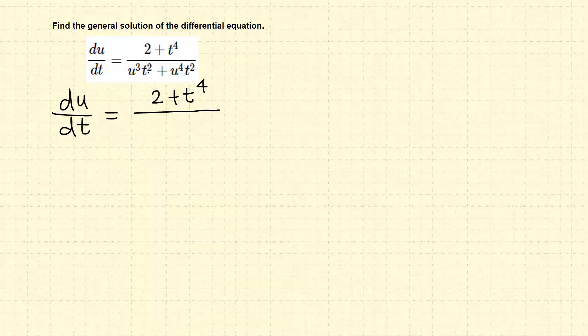So just factor u. Let's look at here: u^3, u^3, u^4, t squared, t squared. Let's factor t squared. We can factor more but we want to separate the variables, so just factor t squared and see what happens. Then we get u^3 plus u to the fourth.